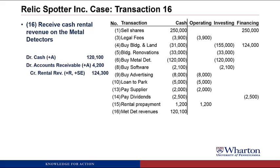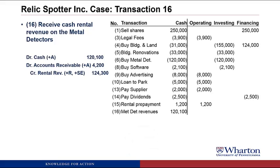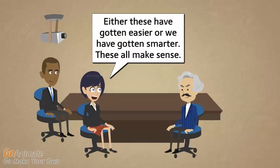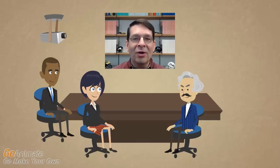In transaction sixteen, Relic Spotter receives cash rental revenue on the metal detectors, totaling $120,100. The answer is operating — an operating cash inflow of $120,100 — because again we're receiving cash from customers. These have gotten easier as we've gotten smarter, so let's move on.